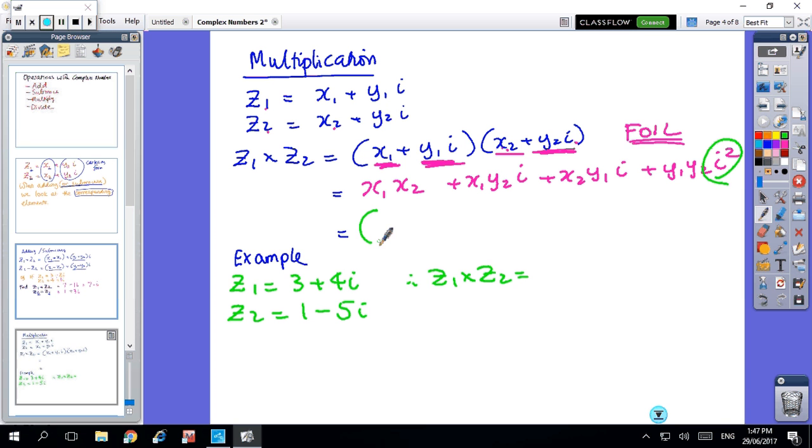Now this is where you have to remember from the last couple of slides that i squared equals minus 1. So what we end up with is that's real x1, x2, and this number is real but we have to change the sign because i squared is minus 1. So that's our real part, and then our imaginary part is x1, y2 plus x2, y1 and i. And that is our imaginary part.